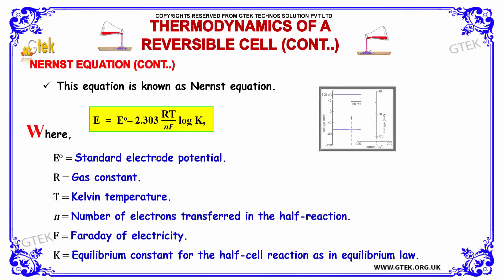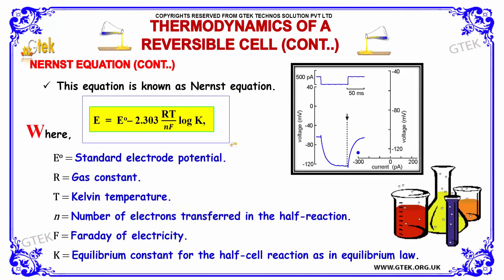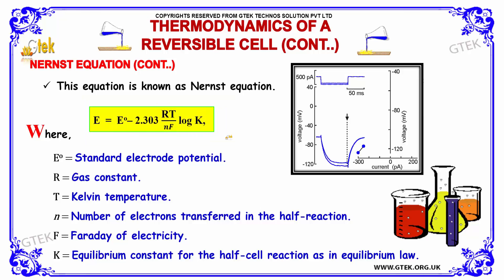This equation is known as the Nernst equation: E = E° − (2.303RT / NF) log K. Here, E° is the standard electrode potential, R is the gas constant, T is the temperature in Kelvin, N is the number of electrons transferred in the half-reaction, F is the Faraday of electricity, and K is the equilibrium constant for the half-cell reaction as defined by the equilibrium law.